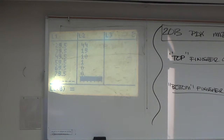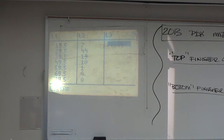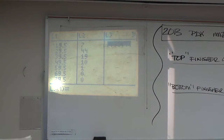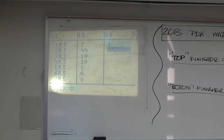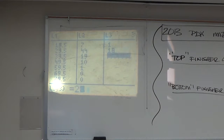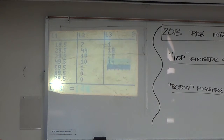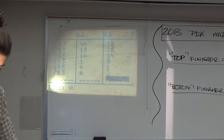And then bump over to L3 and let's put the bottom finishers in there. 1, 18, 28, 14, 9, 2, 3.